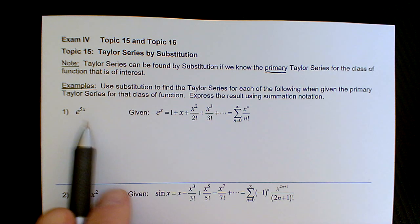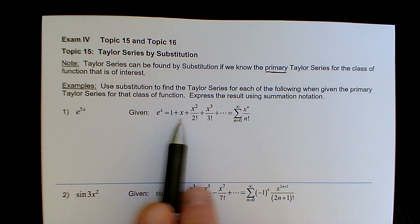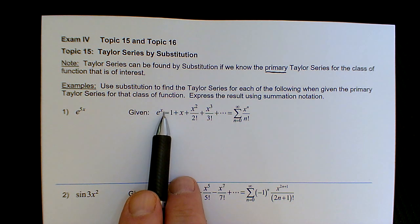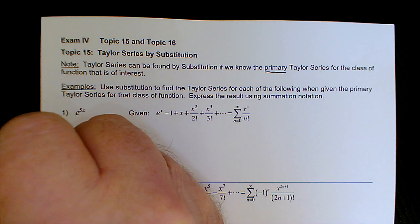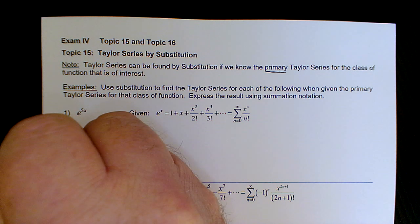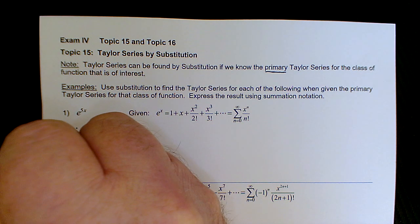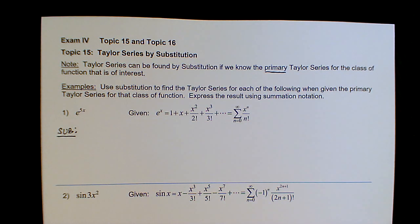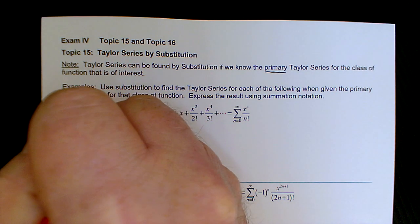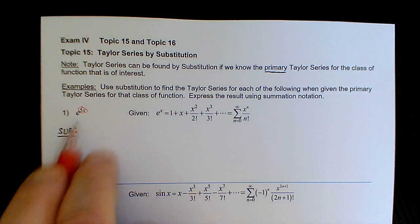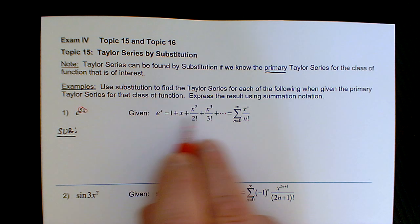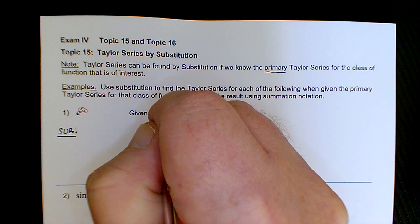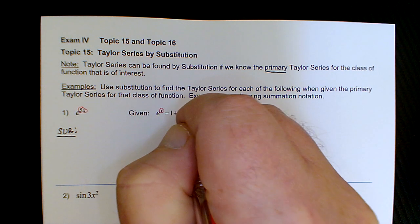For example, here's e to the 5x, and this is what I mean by the primary function: e to the x is given to be this infinite sum. By substitution, basically all we're doing is just like functional notation — we're going to take the 5x in e to the 5x and everywhere in the infinite polynomial, substitute 5x for all the x's.